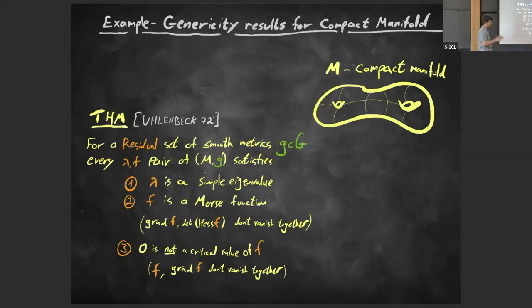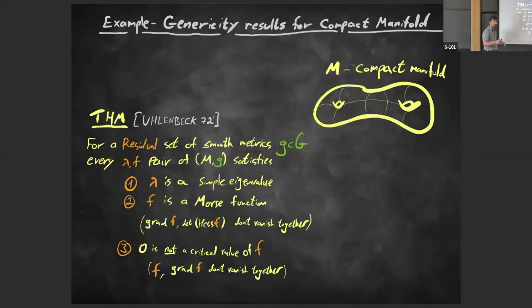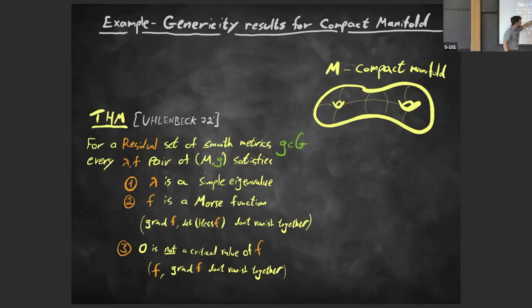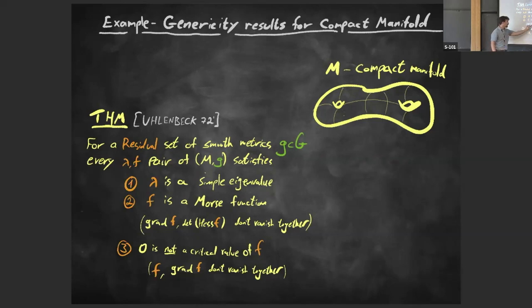Let me talk about genericity in a broader sense. The best example is a result of Uhlenbeck: assume M is a compact manifold. For a residual set — a countable intersection of open dense sets — of smooth metrics g on M, the manifold (M, g) satisfies: each eigenvalue is simple (not a multiple eigenvalue), the eigenfunction is Morse, meaning critical points are non-degenerate, and zero is not a critical value, so whenever f vanishes, the gradient doesn't vanish.